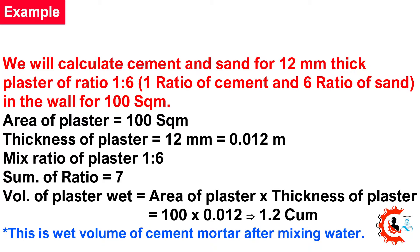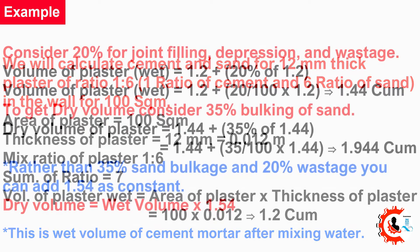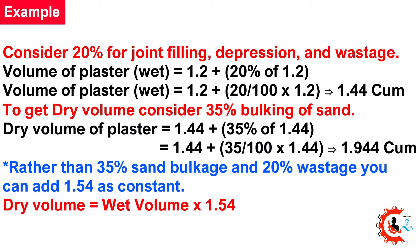Volume of plaster (wet) = Area × Thickness = 100 × 0.012 = 1.2 cubic meters. This is the wet volume of cement mortar after mixing water. Consider 20% for joint filling, depression and wastage. Volume of plaster (wet) = 1.2 + (20/100 × 1.2) = 1.44 cubic meters.